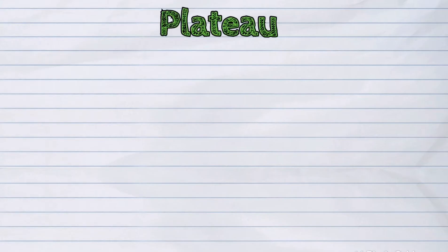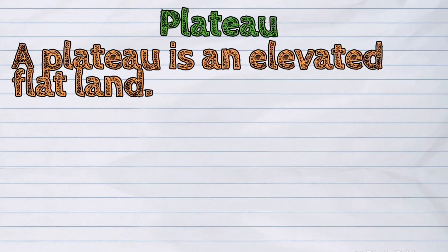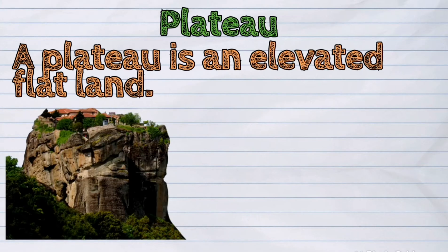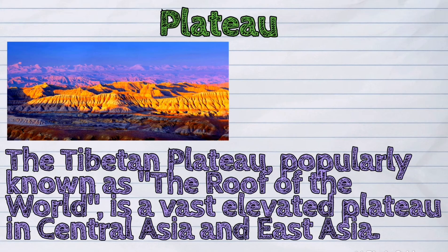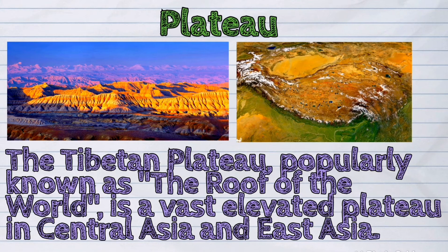The next landform is the plateau. A plateau is an elevated flat land. Think of it as a mountain or a hill whose topmost part is flat. The Tibetan Plateau, popularly known as the roof of the world, is a vast elevated plateau in Central Asia and East Asia.